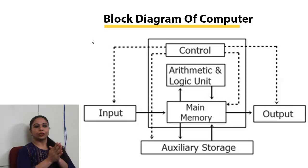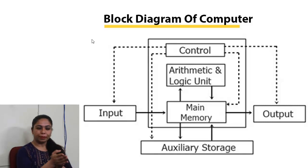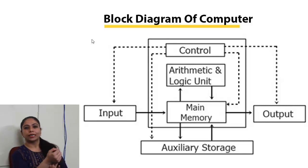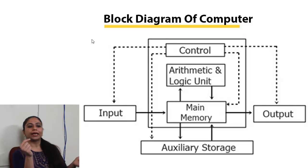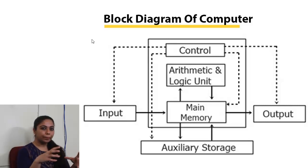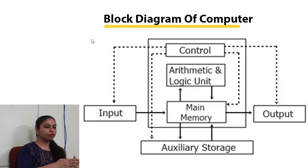In the block diagram, you have main memory at the center, the ALU which is the Arithmetic and Logic Unit, the control section which is the control unit, input and output, and auxiliary storage. This is the block diagram of a computer system, which is very important.